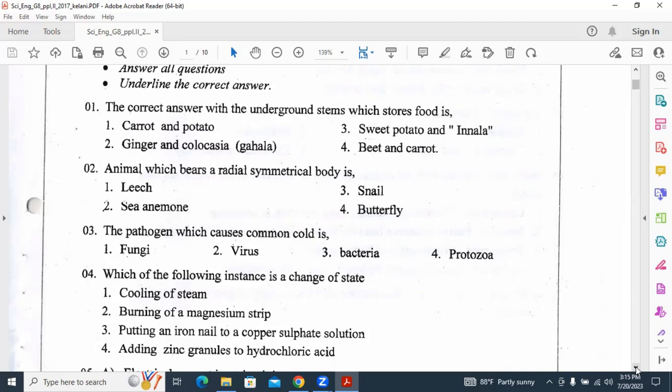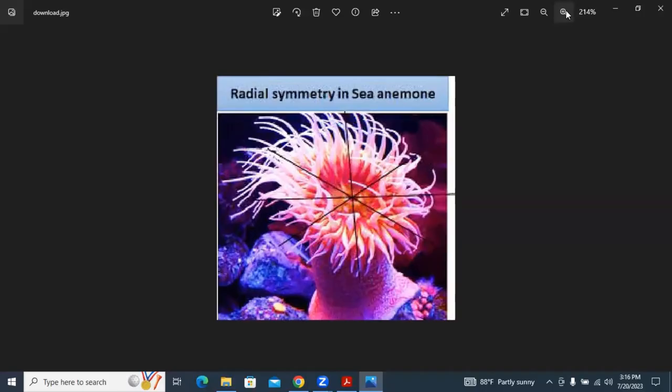Second question: animal which bears a radial symmetrical body is answer number two, sea anemone. Now we will see what is radial symmetry. Organisms can be divided into similar halves by passing a plane at any angle along a central axis. You can see the picture of sea anemone, we can divide it in two similar parts by dividing from any of the axes given here.